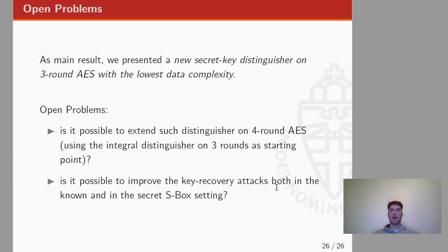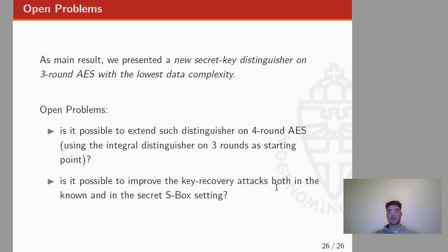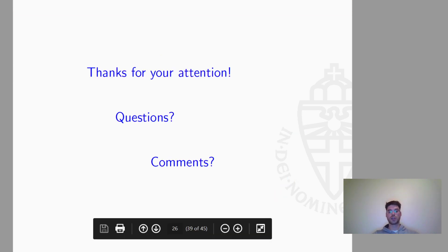That's all from my side. As our main result, we presented a new secret-key distinguisher on 3 rounds of AES, which is independent of the secret key and has the lowest data complexity in the literature. There are open problems for future work: first, whether it is possible to set up an impossible mixture-integral distinguisher on 4 rounds of AES, using the classical integral distinguisher on 3 rounds as a starting point; and second, whether it is possible to exploit this distinguisher to present new key recovery attacks for round-reduced AES in the low-data scenario, both in the known and secret S-Box settings. Thanks for your attention.